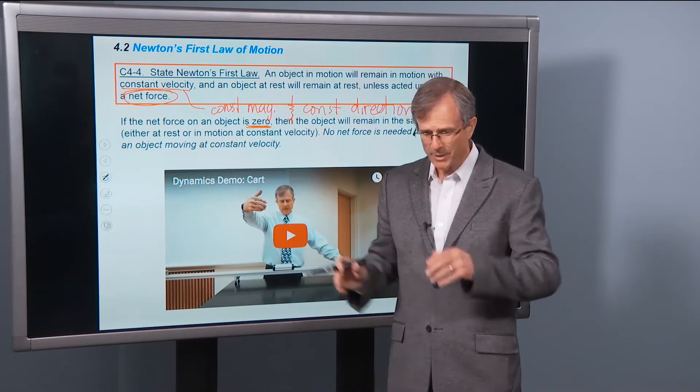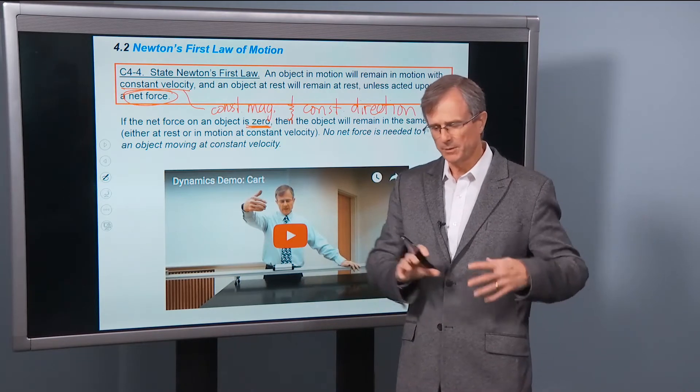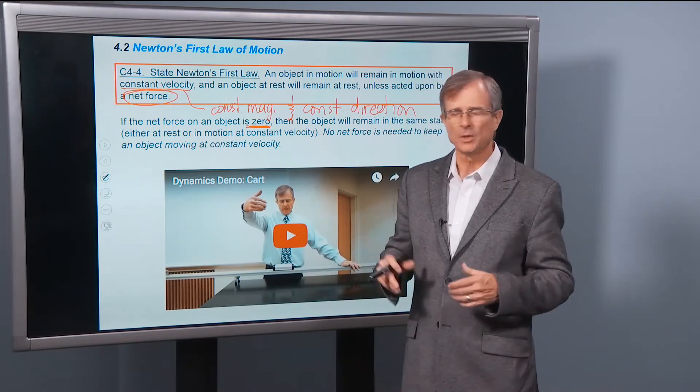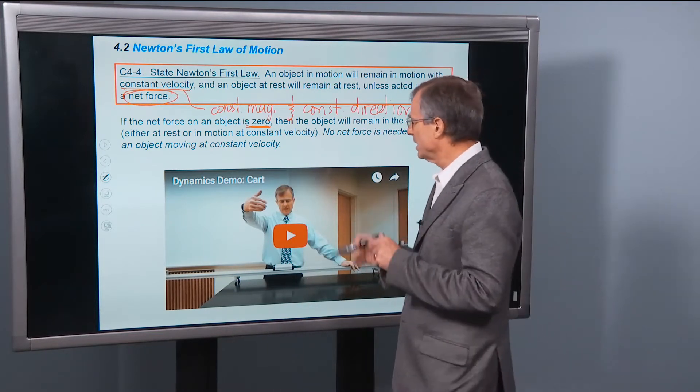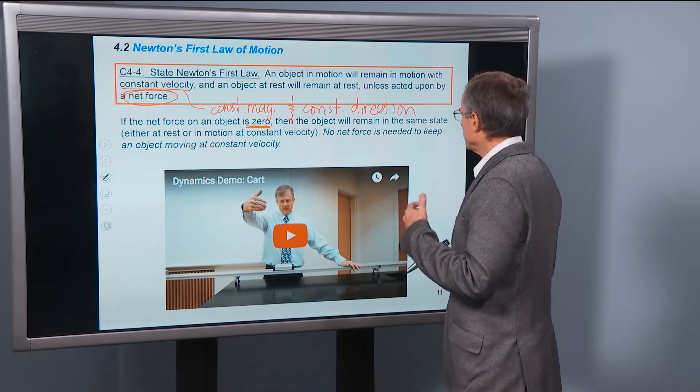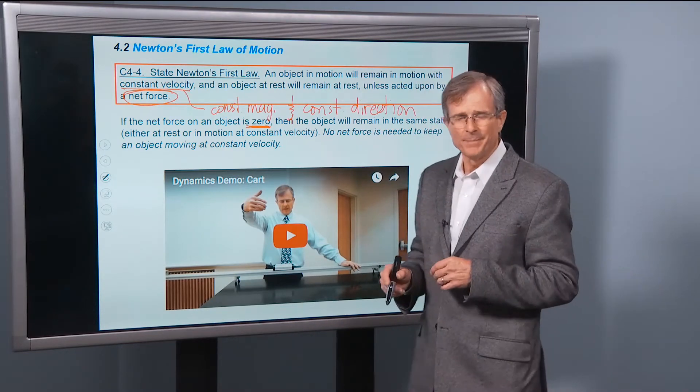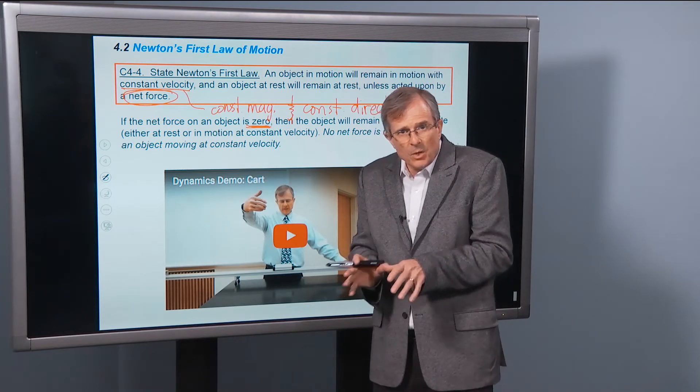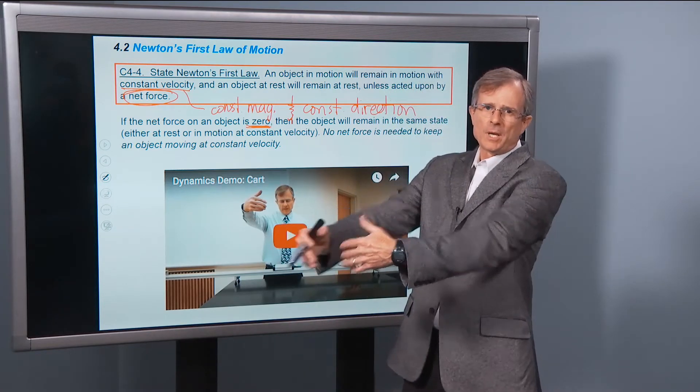Now there might be gravity, there might be a friction force, there might be the force of the engine pushing the tires along, there might be air drag, etc. You add up all those forces, then the object will remain in the same state, either at rest or moving with constant velocity.